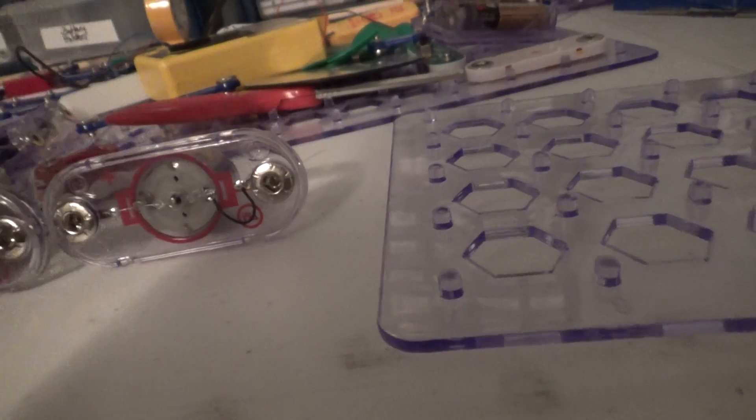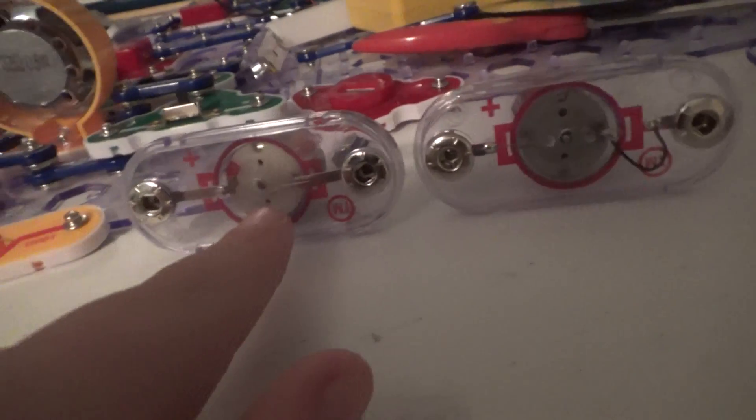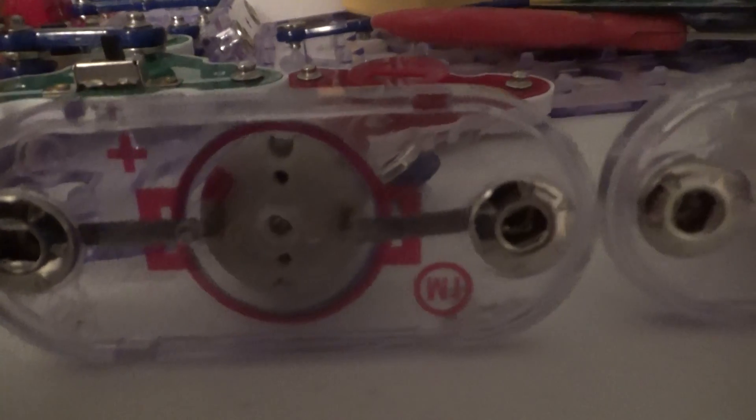And you notice that the bottom of the motor M7, the bottom of the actual motor part, you notice it's a bit more grayish than the motor M1. You can see it's a bit more white.